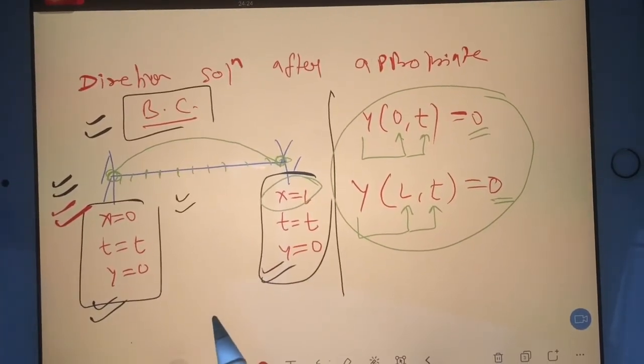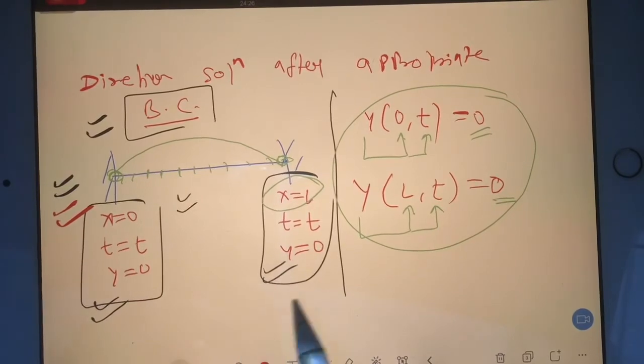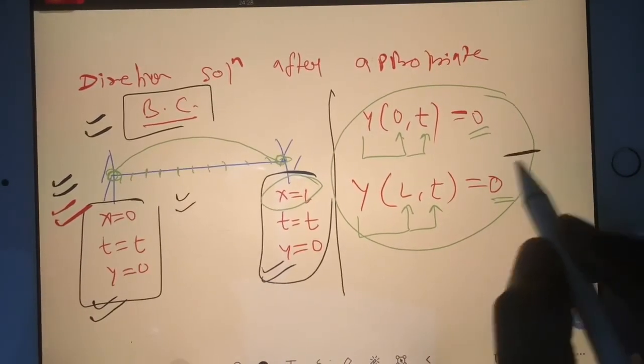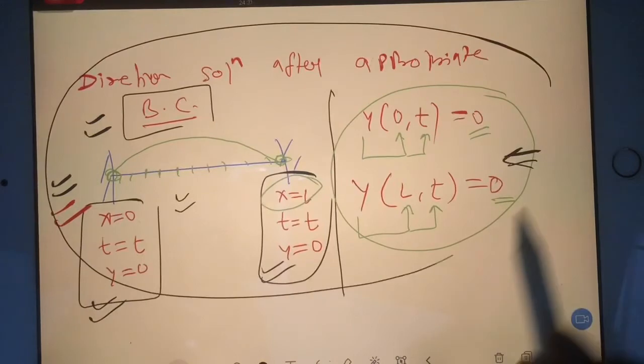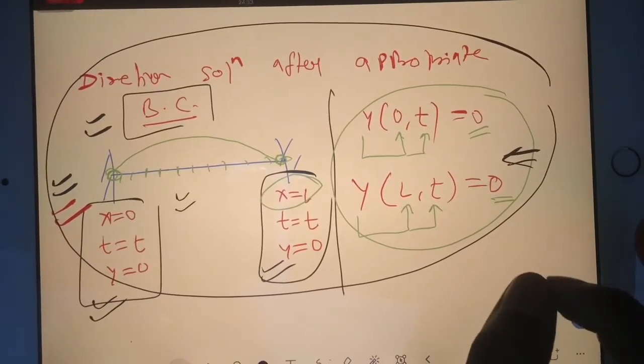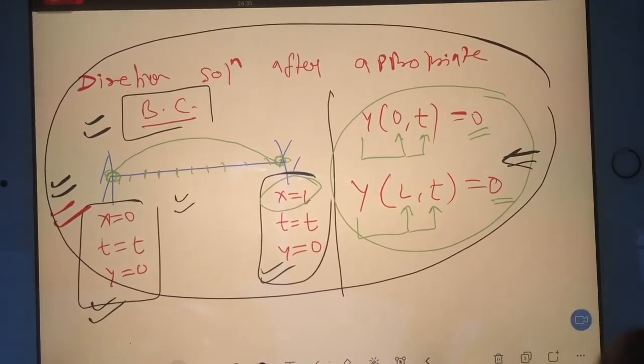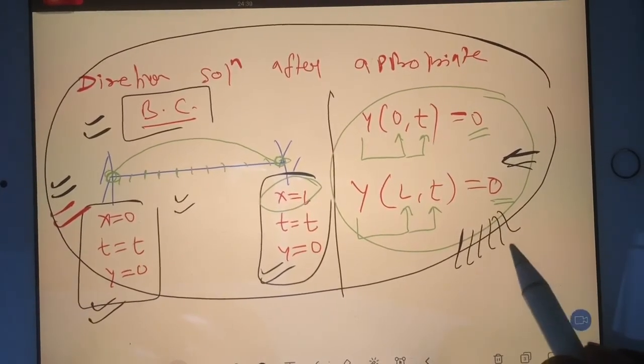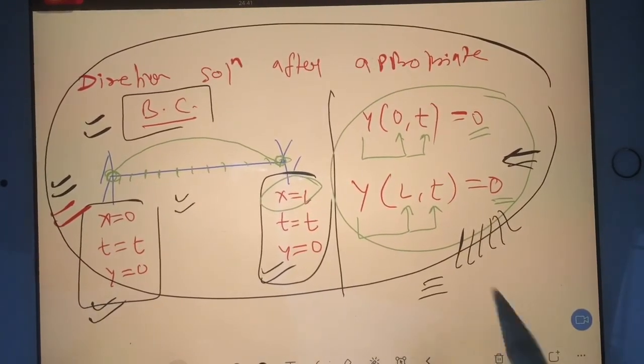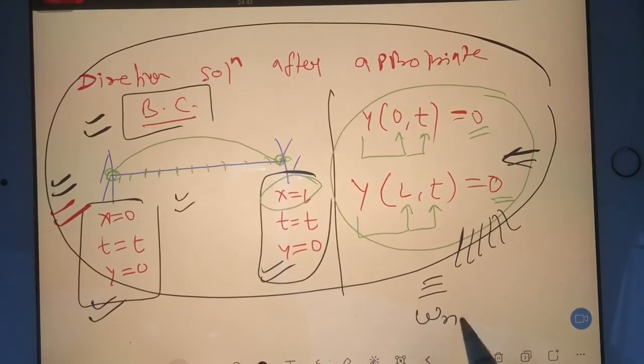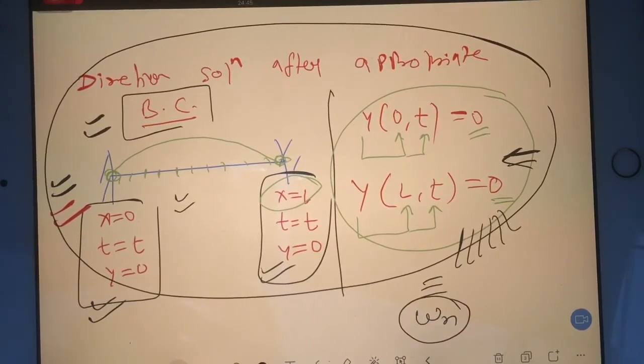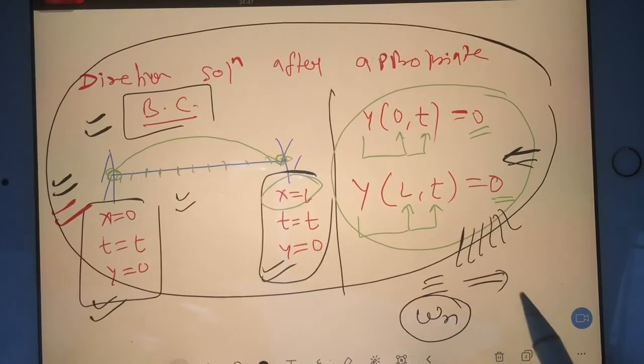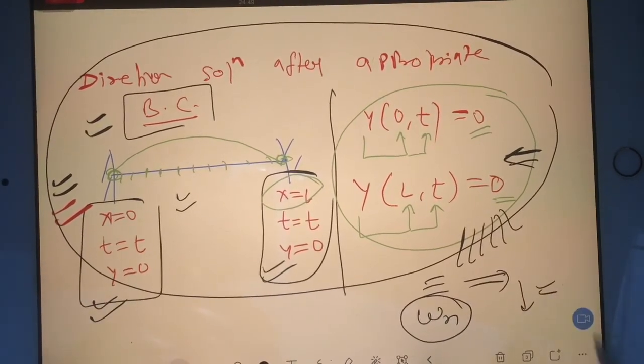For the case of vibration of a string, when we solve this entire boundary condition we get a solution. Let's understand the solution and from that how to find out frequency. You see how many steps are involved. Our main job is to find out omega_n. We have to find equation of frequency and then find omega_n.